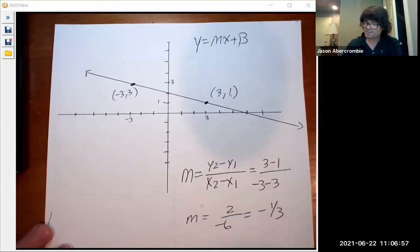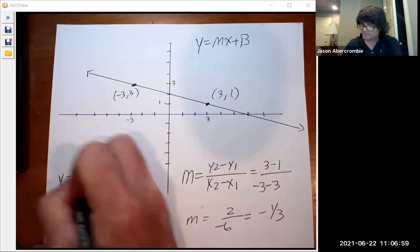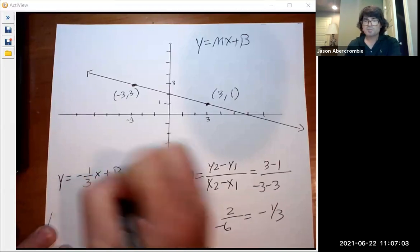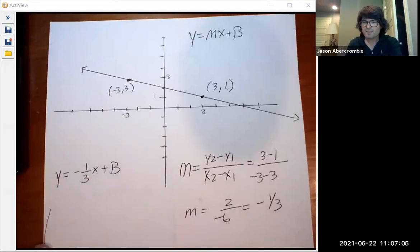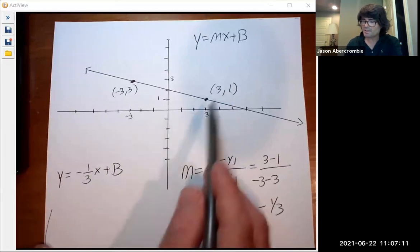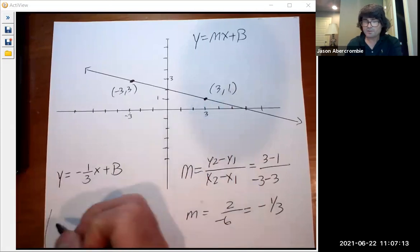So we're going to start that out. We're going to say y equals negative one-third x plus b. And then you can solve for b by picking either of these points, plugging in the x and the y, and we'll do that here.